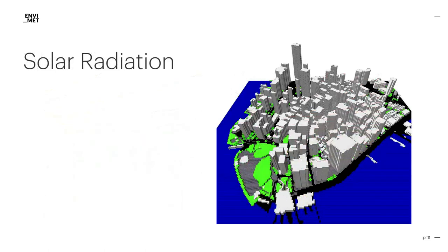As I already mentioned, a very large driver of climate models in general is, of course, the solar radiation. In such densely built areas as in New York City, shading is pretty complex to simulate. It can, however, be assumed that most parts of Manhattan are mostly shadowed by skyscrapers.